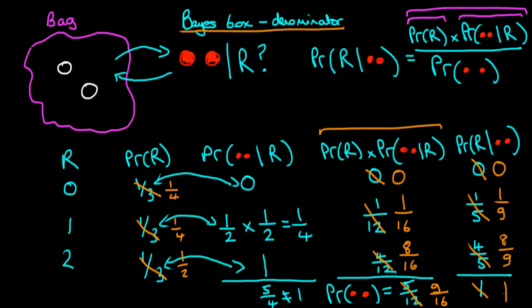Comparing the two examples: we changed our prior to give more weight to the belief that there were two red balls in the bag. We see the effect of this because the posterior probability of two red balls went up — eight ninths is greater than four fifths. Correspondingly, the posterior probability of one red ball declined. In summary, this video introduced the Bayes box, a mechanical way of seeing how Bayes' rule works, which is useful in discrete examples.